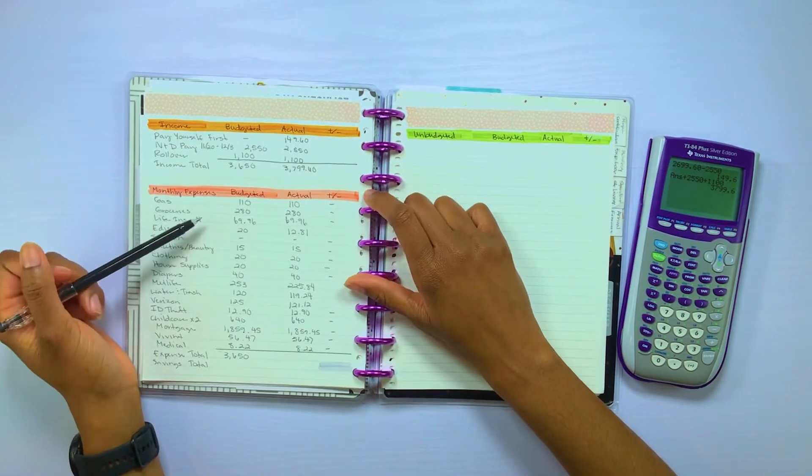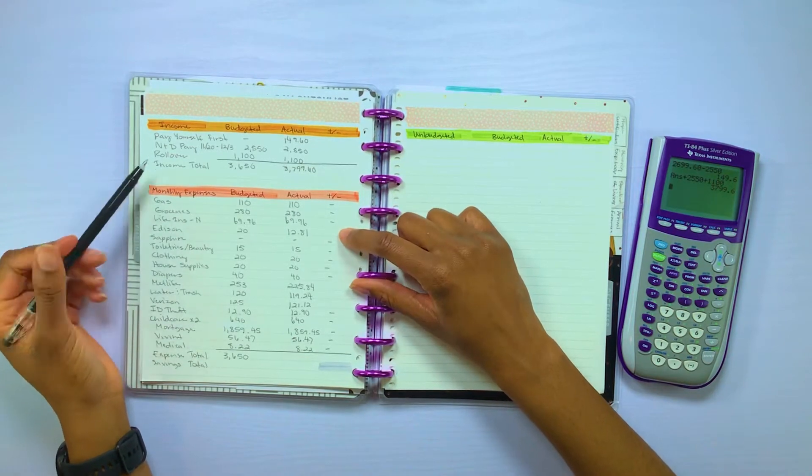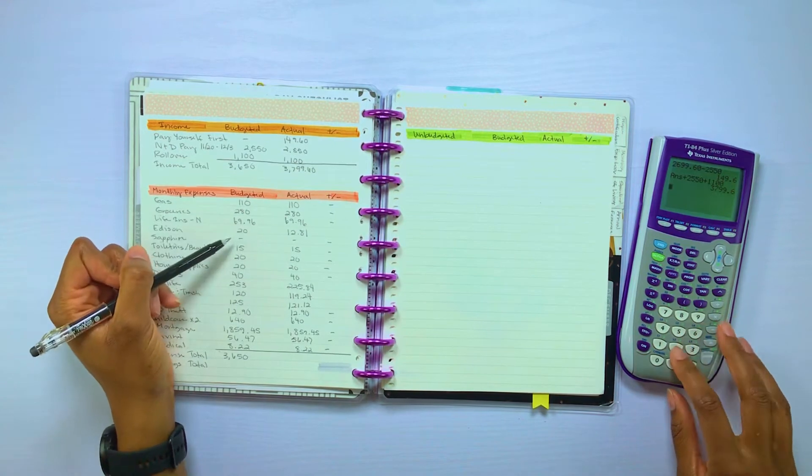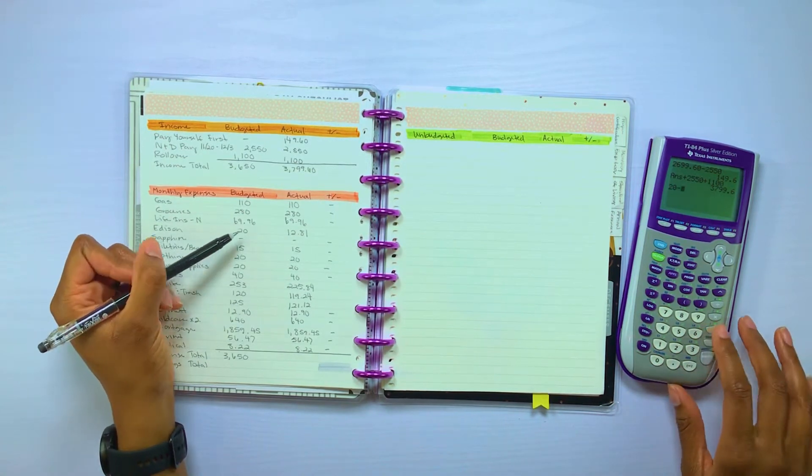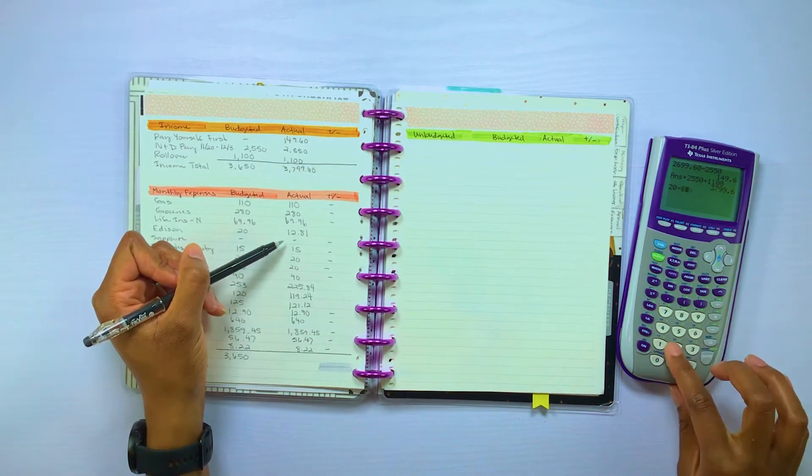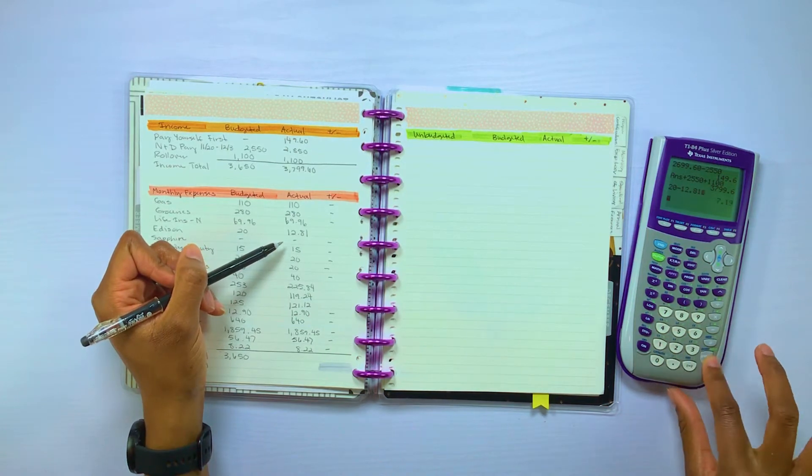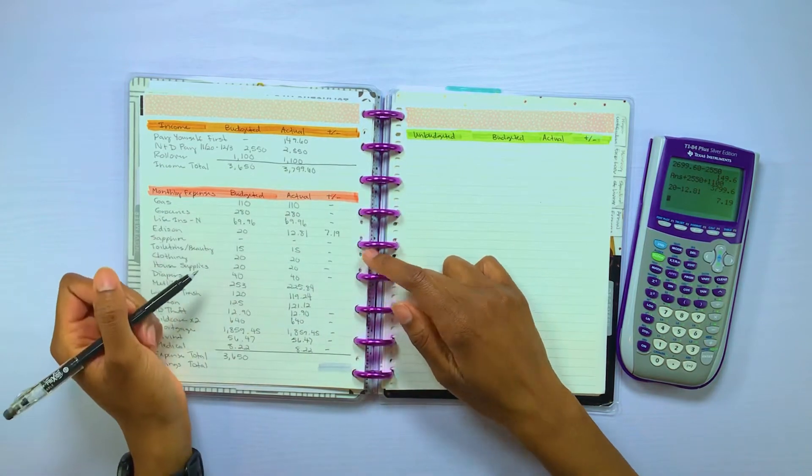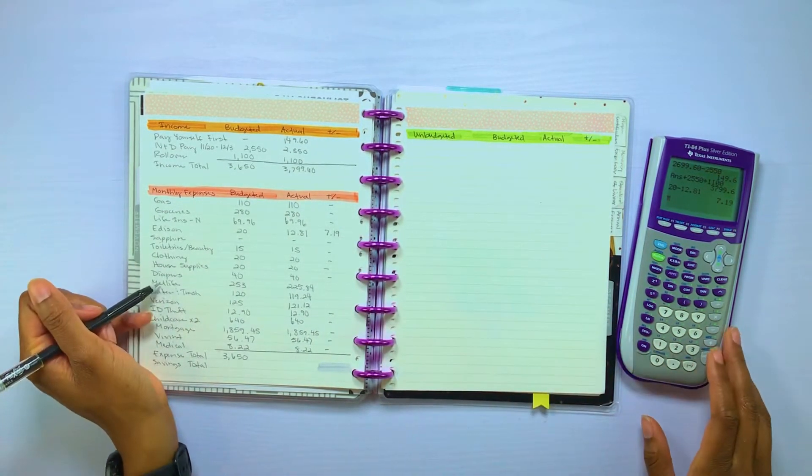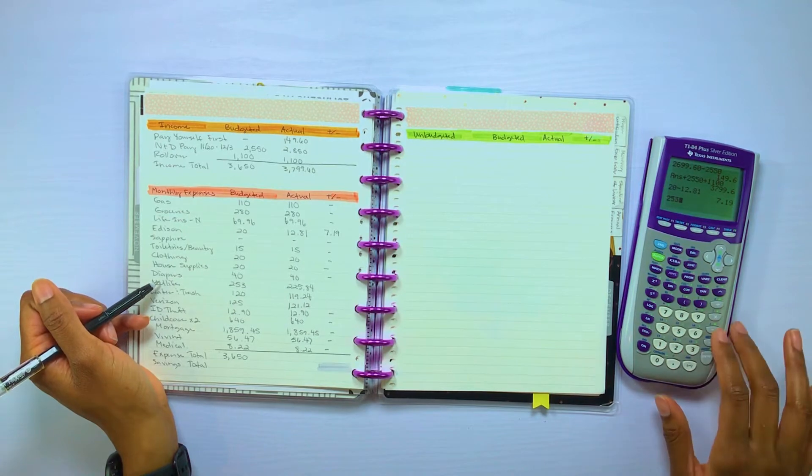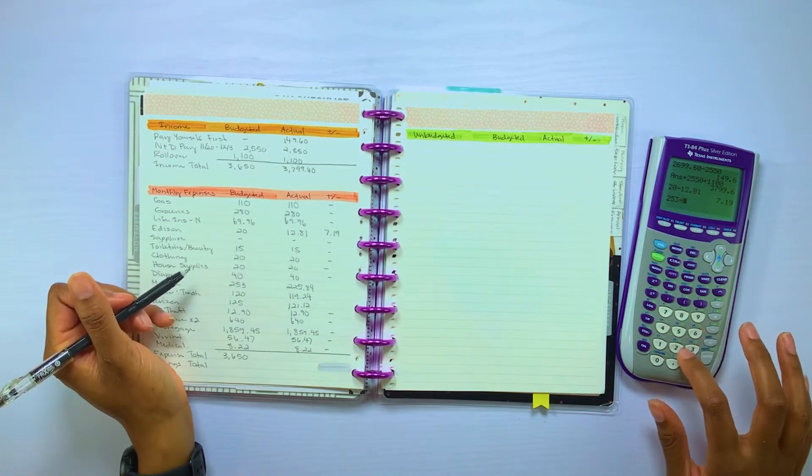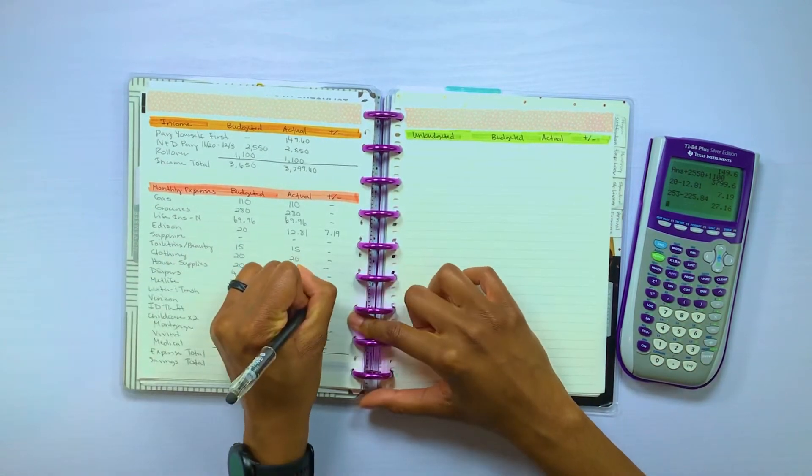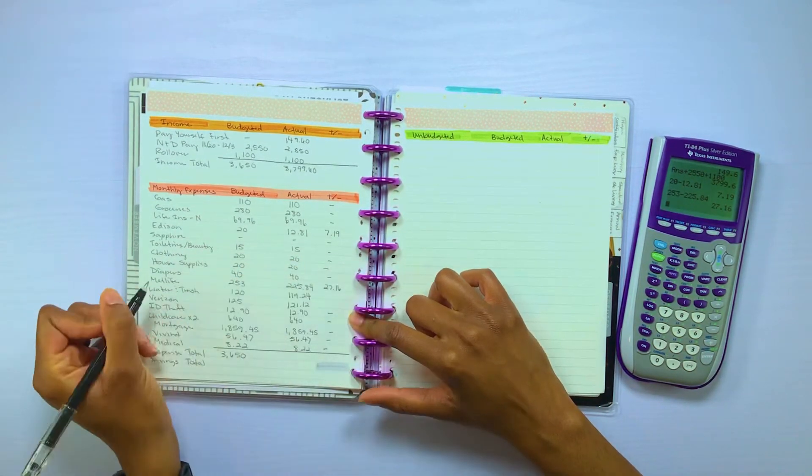As for our expenses for this paycheck, everything was on budget except for a couple of things such as our electricity bill. I budgeted $20, but it was less than that at $12.81, which left us with $7.19 as we were under budget. Our MetLife, which is our car insurance, I budgeted $253 and it actually came in at $225.84. So we were $27.16 under budget.